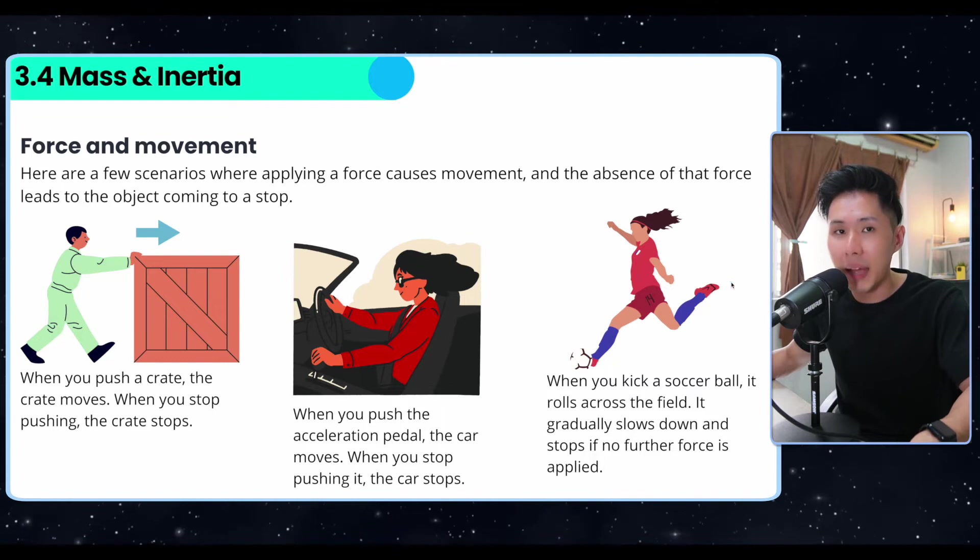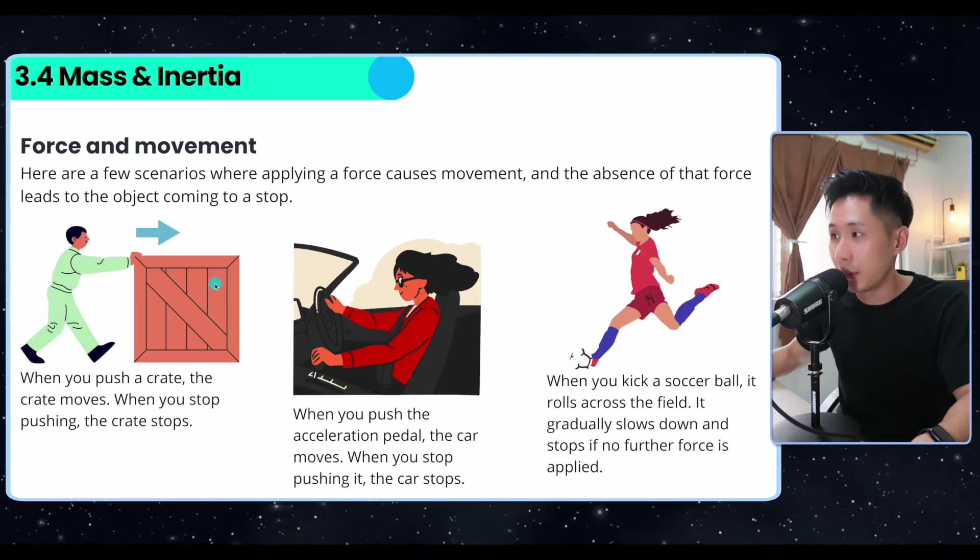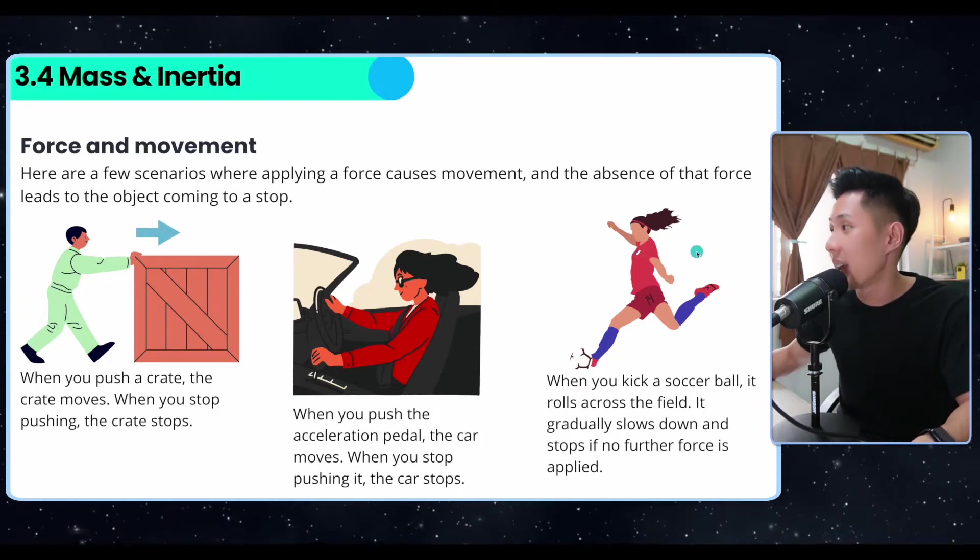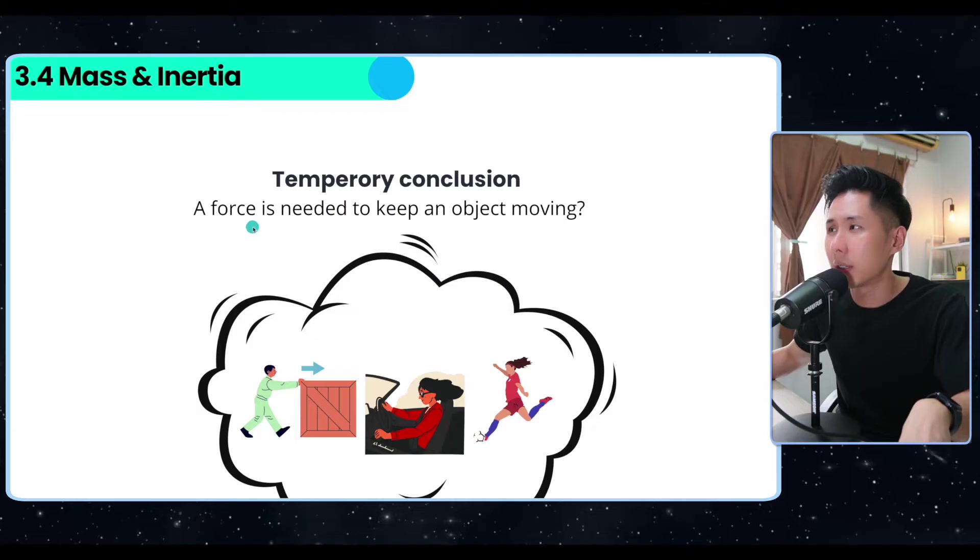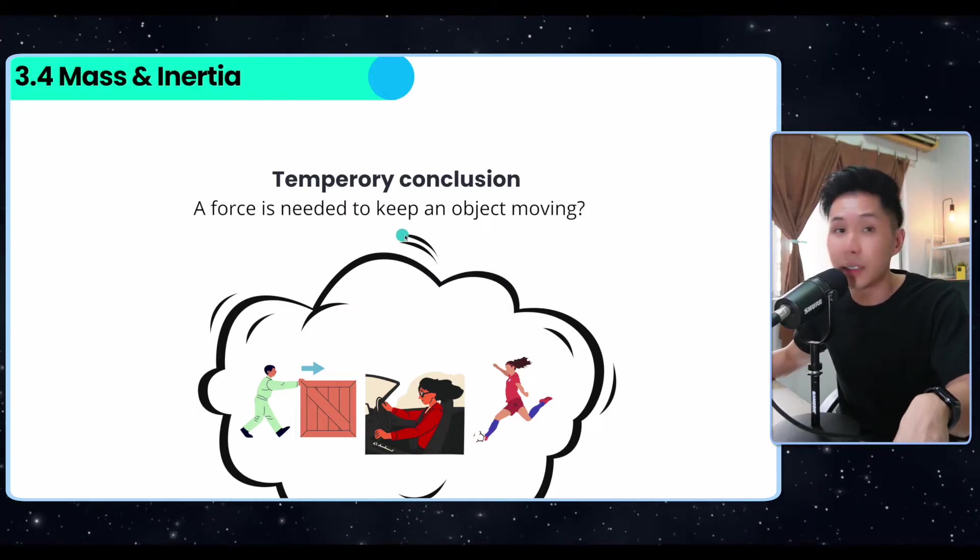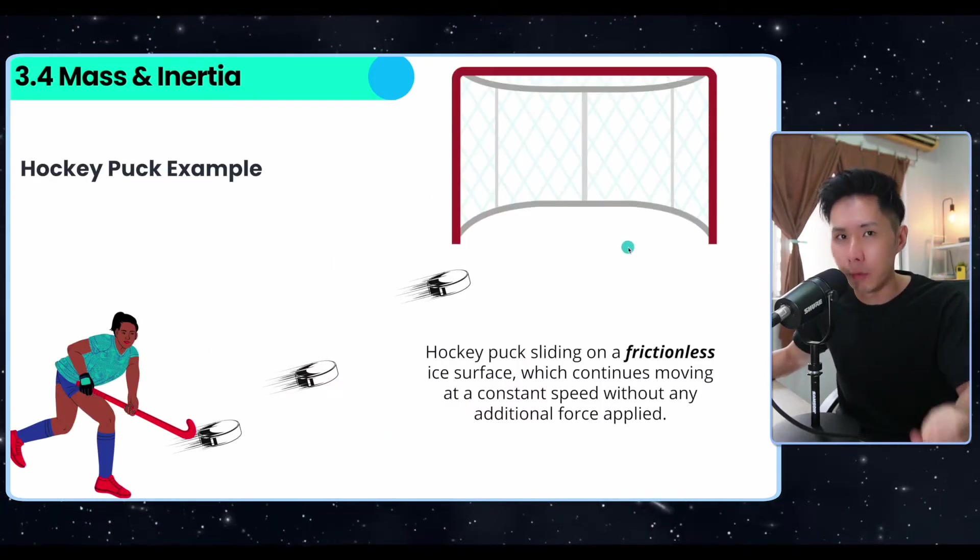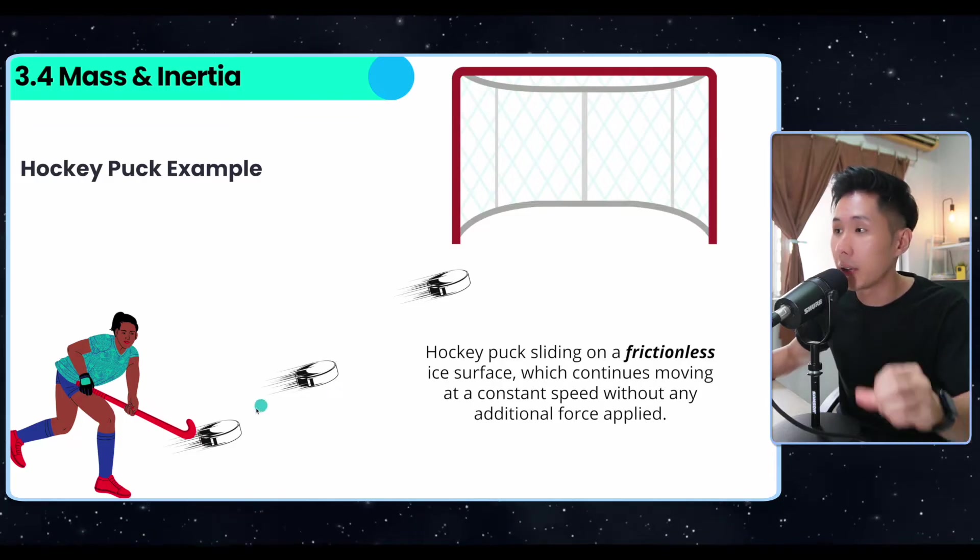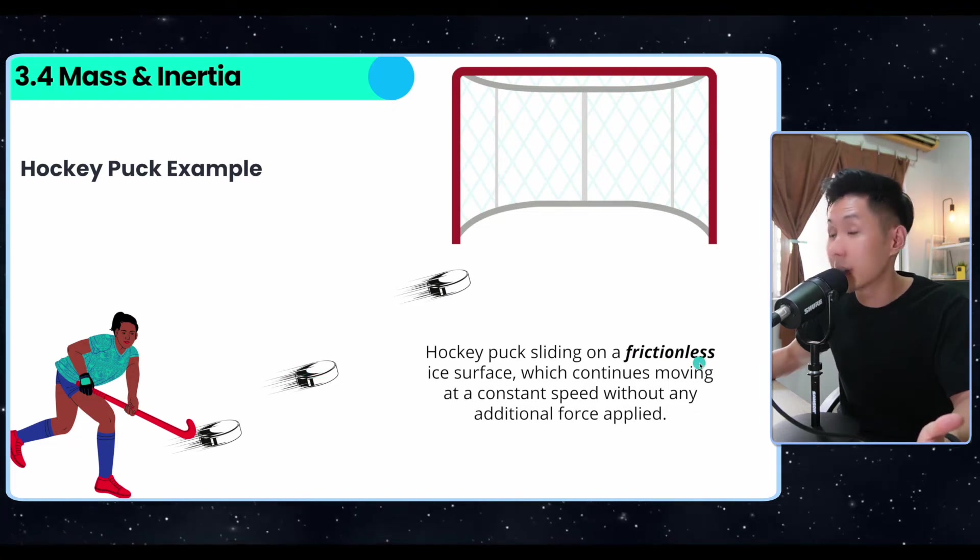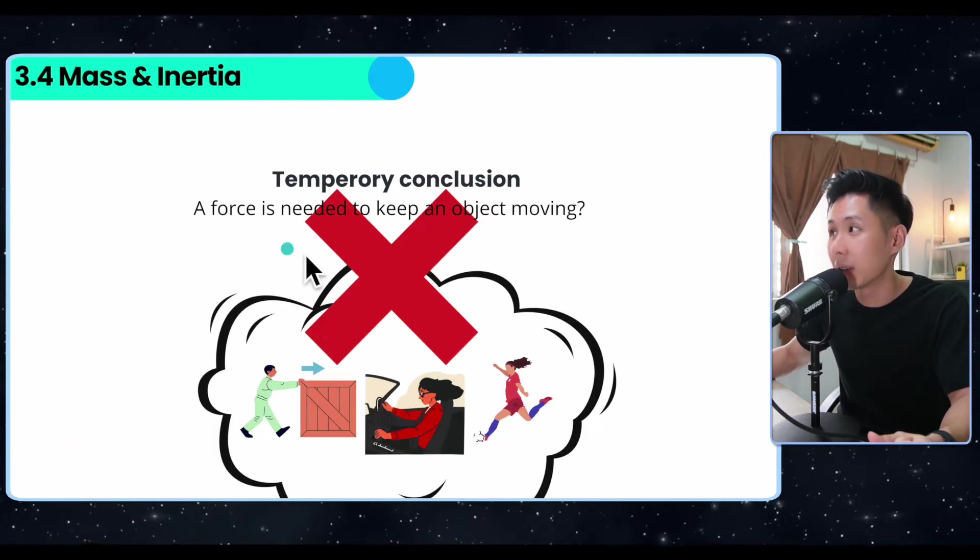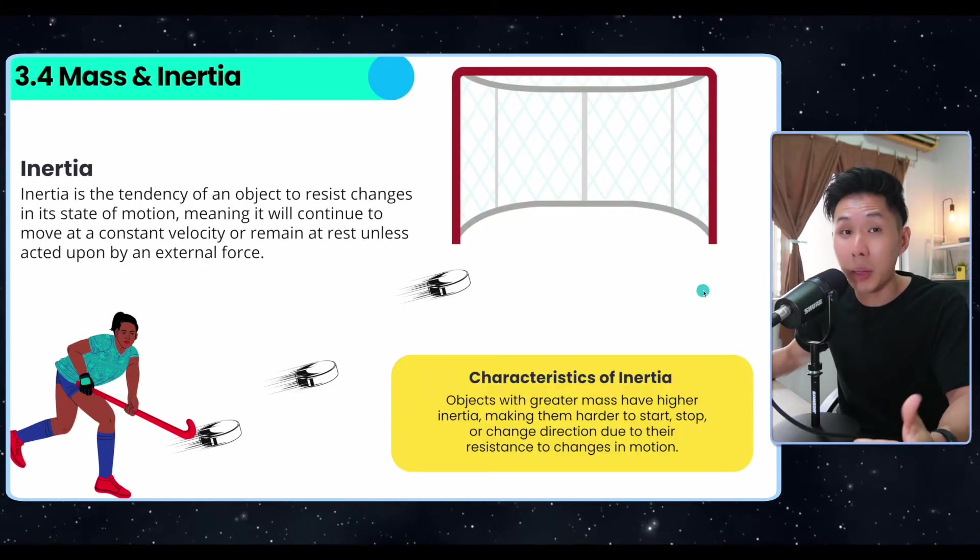Now we've talked about weight and mass. Let's move deeper into mass and talk about inertia. Let's look at this diagram. When you push a crate, the crate moves. When you push the acceleration pedal, the car moves. When you kick a ball, the ball moves. When you stop exerting force, they stop moving. Can we make a conclusion that a force is needed to keep an object moving? The answer is no. There are times even when the external force is removed, the object will still move. For example, when you hit a hockey puck, the puck will still move on a frictionless surface. We cannot make the conclusion that a force is needed to keep an object moving.